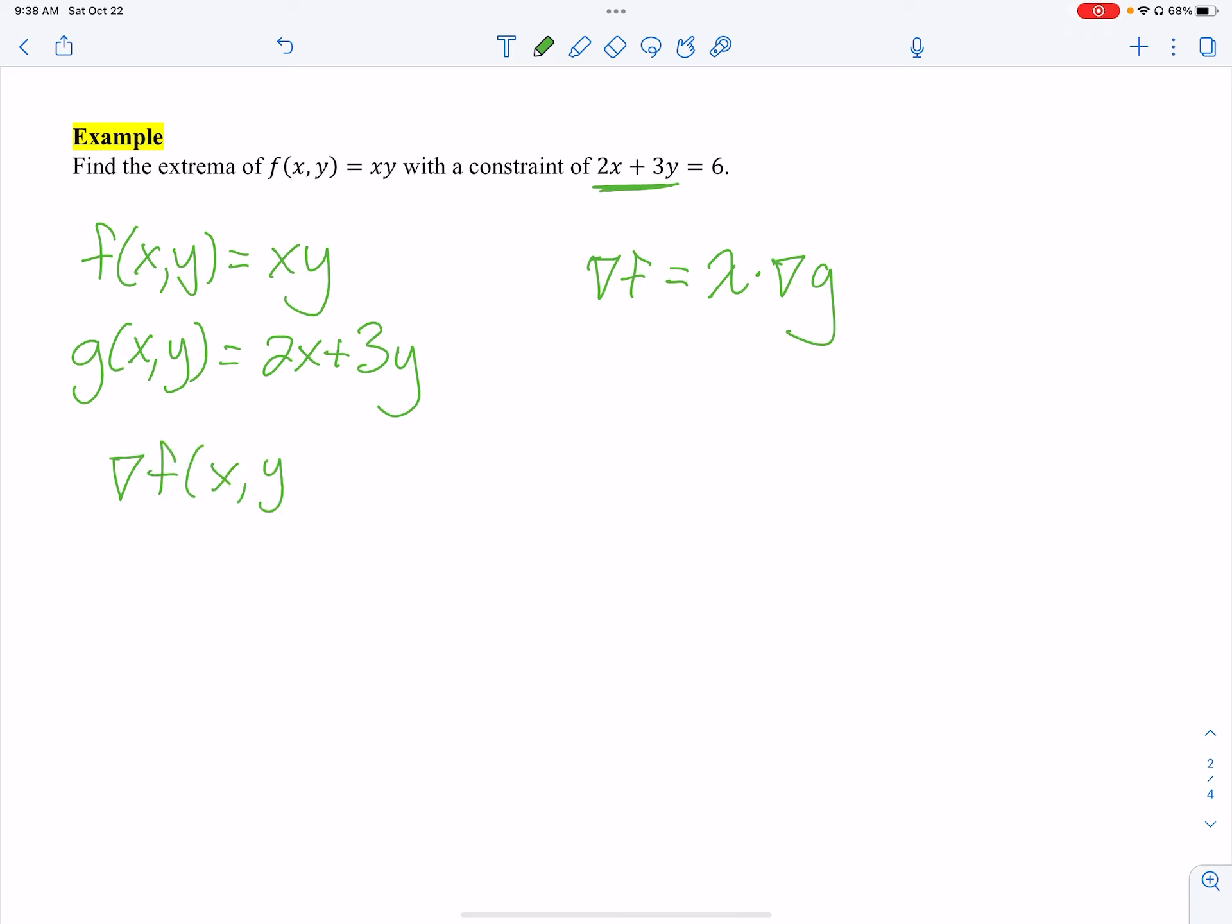So, gradient of x, y. Remember, the gradient is f_x, comma, f_y, and it is a vector, because remember, it gives me the direction of the quickest way out, or the steepest incline. So, I need f_x. Okay, well, the partial derivative of f with respect to x is y. The partial of f with respect to y is x. So, I have that. Then, I take my gradient of g, and take my partials there. I get 2, 3.